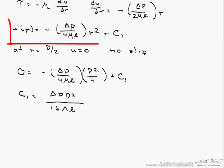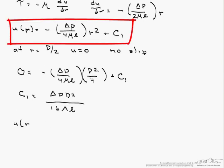Next, we put that in our equation for u of r. And that equals minus delta P over 4 mu times l times r squared plus delta P d squared over 16 times mu times l.